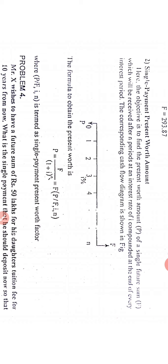Now here, the objective is to find the present worth amount P of a single future sum F. Single amount, it means one time again. This present worth of P, one time single time, which will be received after n periods at an interest rate of i compounded at the end of every interest period.